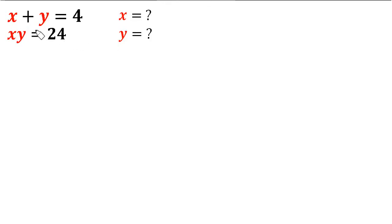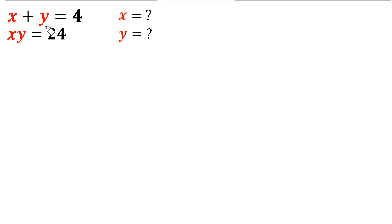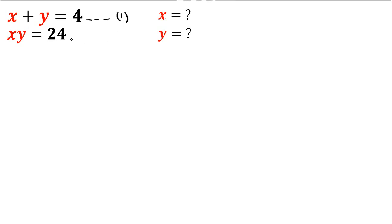Hi everyone, solving an Olympiad question today: x plus y equals 4 and xy equals 24. What's going to be the value of x and y? We have two equations and we're going to solve them simultaneously. A lot of people like using the elimination method, but for a question like this that can't work — we have to use the substitution method.